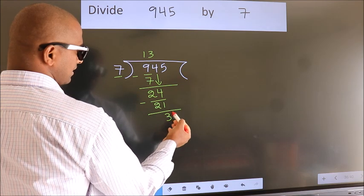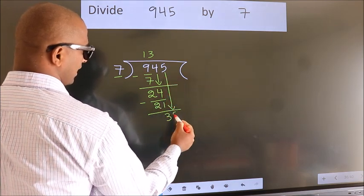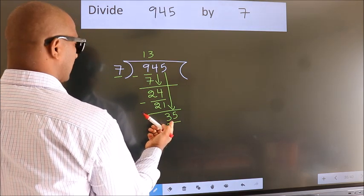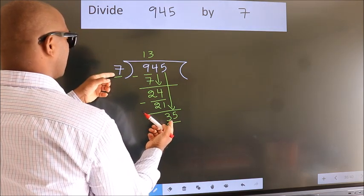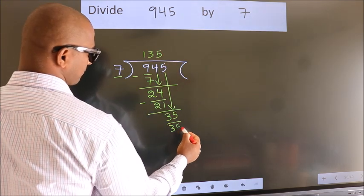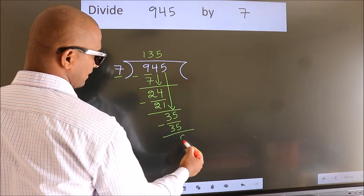After this, bring down the beside number. So 5 down, so 35. When do we get 35 in the 7 table? 7 fives, 35. Now we subtract. We get 0.